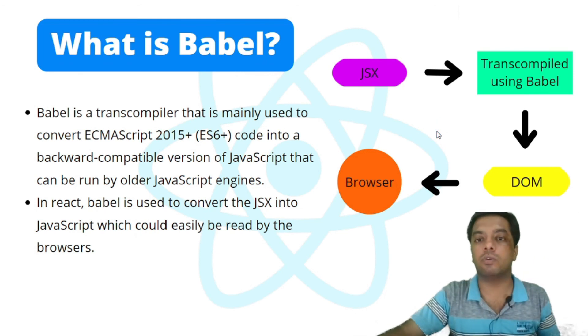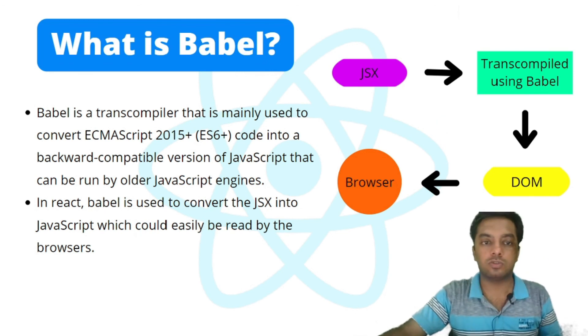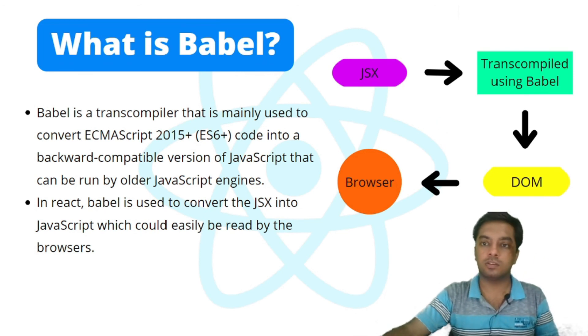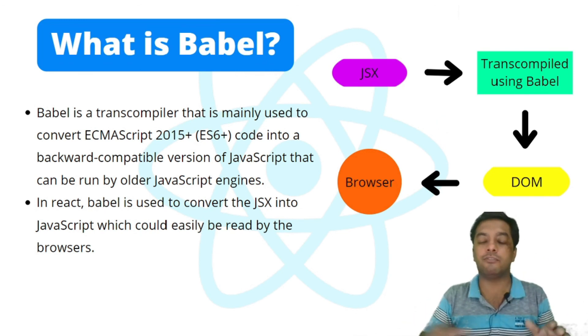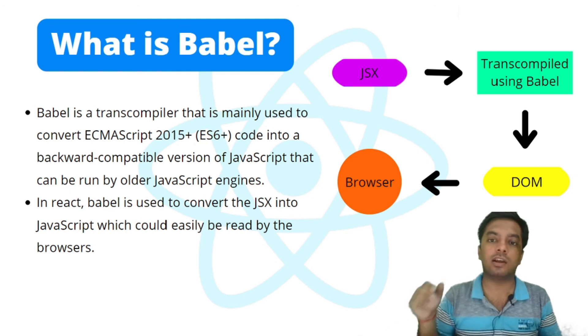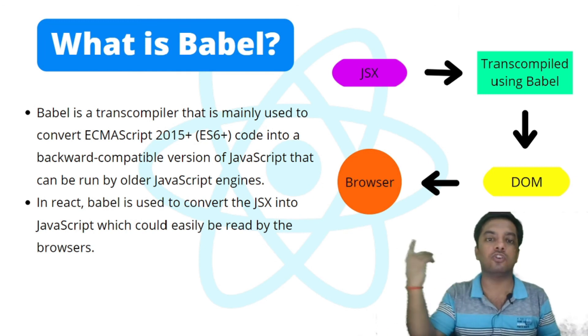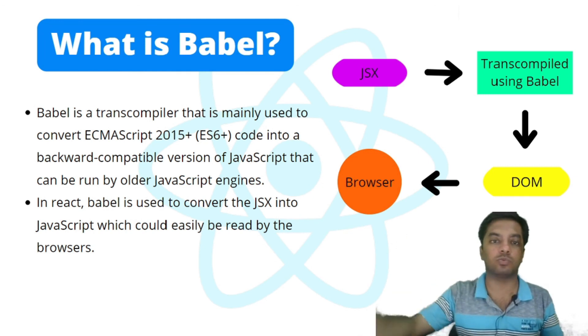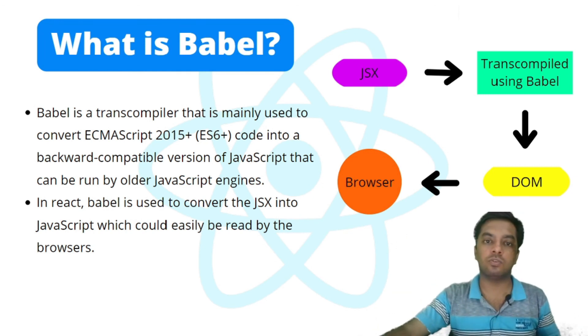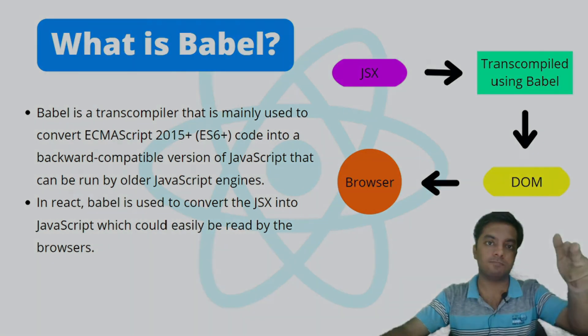So that's it for this video. We now have a deep understanding of JSX, Babel, transpilers, and how code is rendered in React — how everything works behind the scenes, how the browser manipulates and re-renders the content. If you have any doubts, ask me in the comments below or join my Telegram group. Thank you, bye!